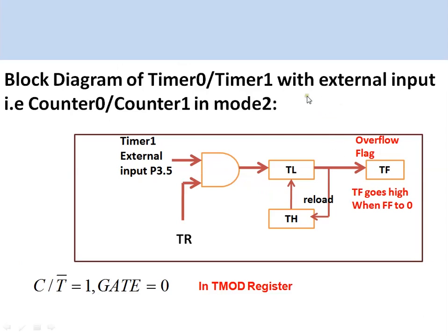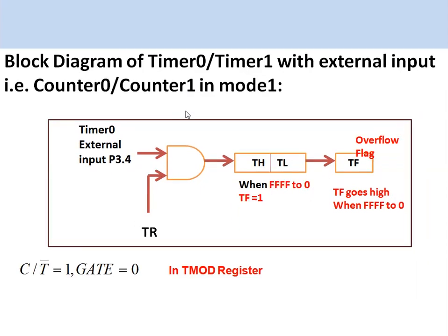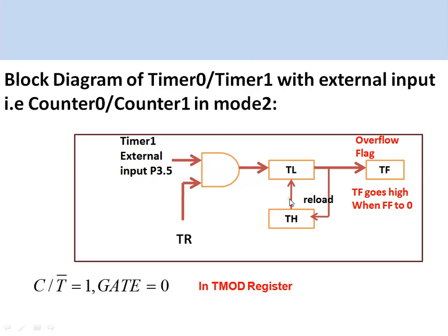Counter 1 in Mode 2 is an 8-bit auto-reload mode, compared to Mode 1 which is 16-bit. In Mode 2, the initial value is loaded into TH1. When the timer is started with the TR bit, this value is automatically reloaded into TL1 each time it overflows, and TL1 starts incrementing again from that value.